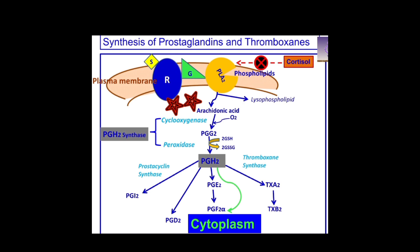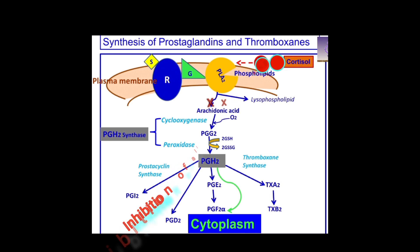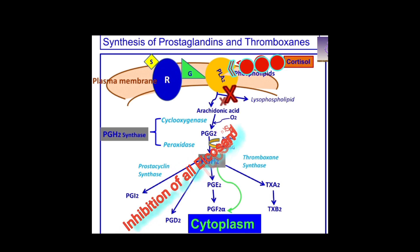The lack of availability of arachidonic acid results in the inhibition of the synthesis of all eicosanoids.